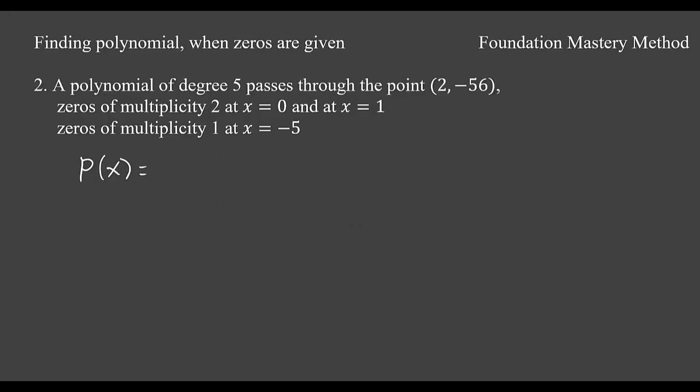We are taking another example. It says that a polynomial of degree 5 passes through the point (2, -56) and it has all these zeros mentioned: x equals 0, x equals 1 with multiplicity 2, and x equals negative 5 with multiplicity 1.